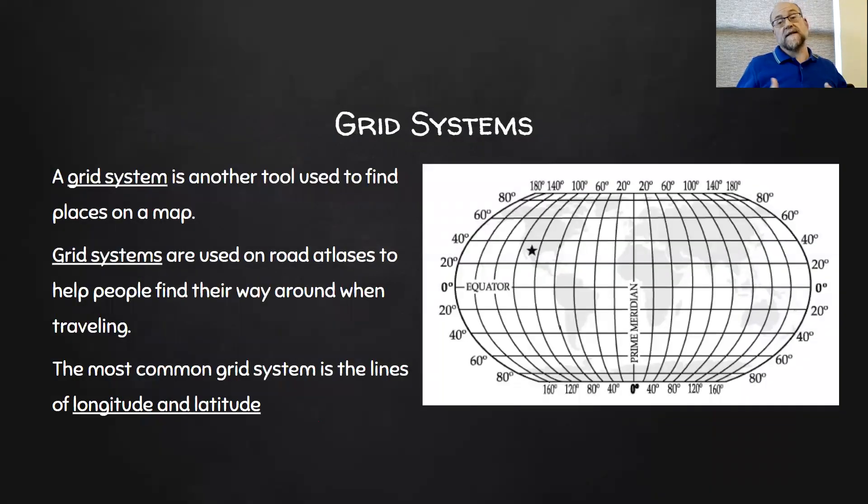Now, grid systems. They help us use maps better. They help finding things on a map easier. And the most common ones are longitude and latitude.